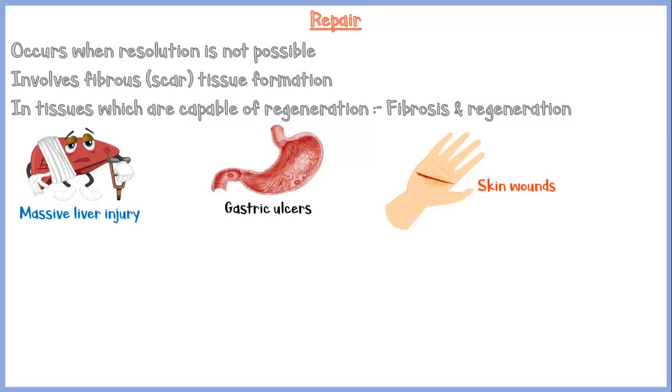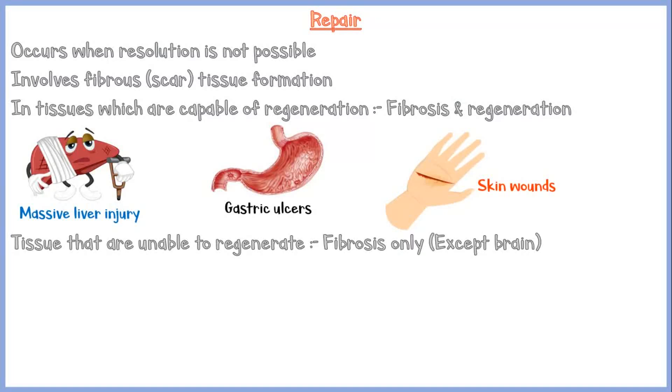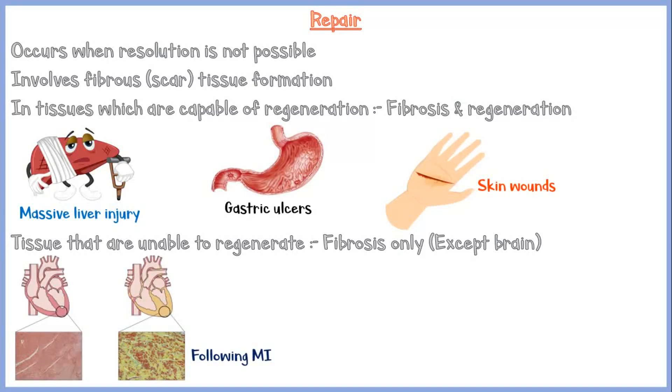Permanent tissues that are unable to regenerate — except the brain — will heal by fibrosis only. For example, following a myocardial infarction, the necrotic tissue will be replaced by a scar. Even though the brain contains permanent cells, there will be no fibrosis in the brain, because the brain lacks a fibrous connective tissue framework. Therefore, wounds in brain tissue will result in formation of cavitary lesions.